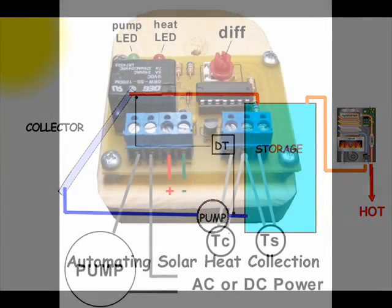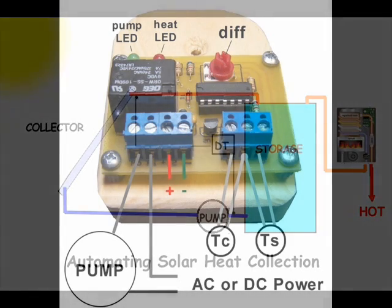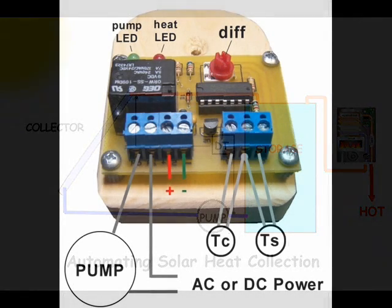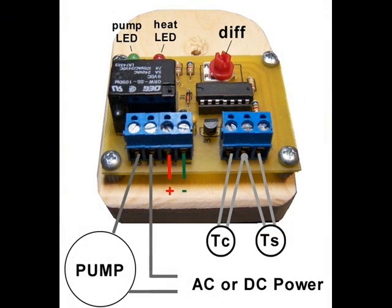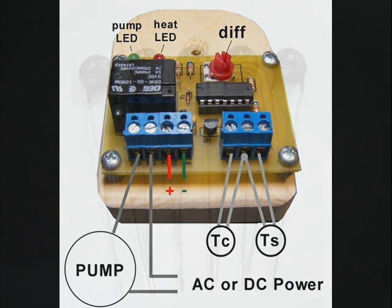Differential controllers are used to automate the process of collecting solar heat. They do this by sensing both collector and storage temperature. Then, they activate the pump to collect heat when the time is right. This video demonstrates how differential controllers sense temperature differences and activate pumps at the appropriate times.